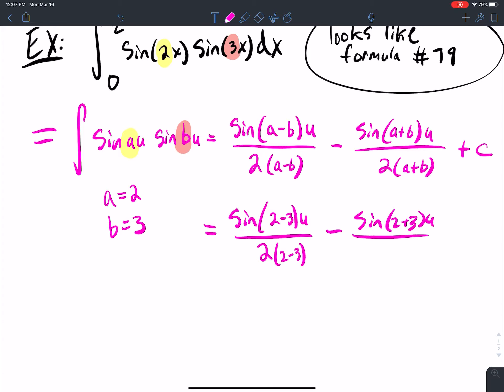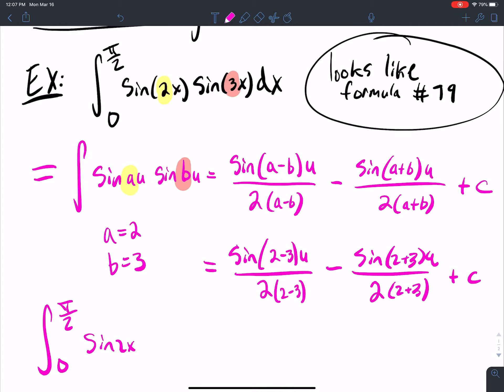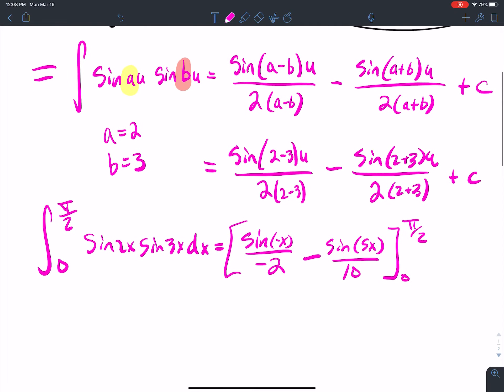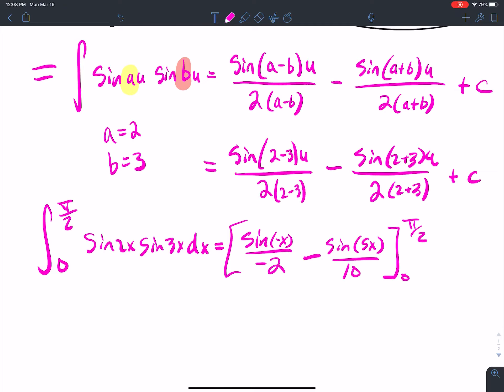Now we're doing a definite integral. So this zero to pi over two sine two X sine three X DX is going to equal sine of negative X over negative two minus sine of five X over 10 evaluated from zero to pi over two. So just plug in those numbers. Pi over two, sine of negative pi over two, think about a unit circle. Negative pi over two is going to get me negative one.